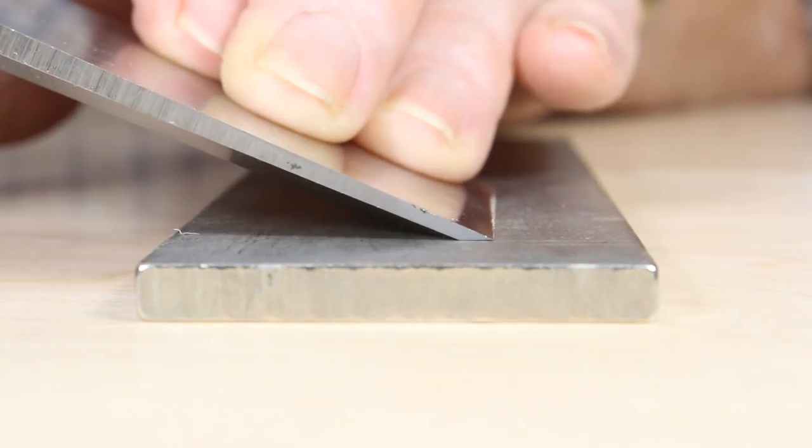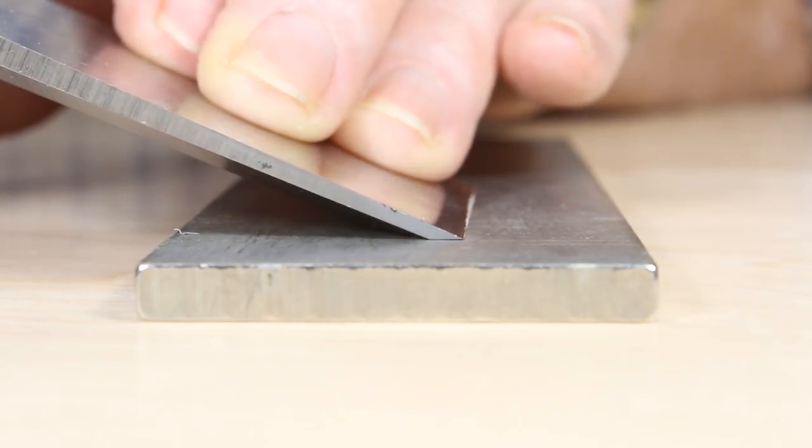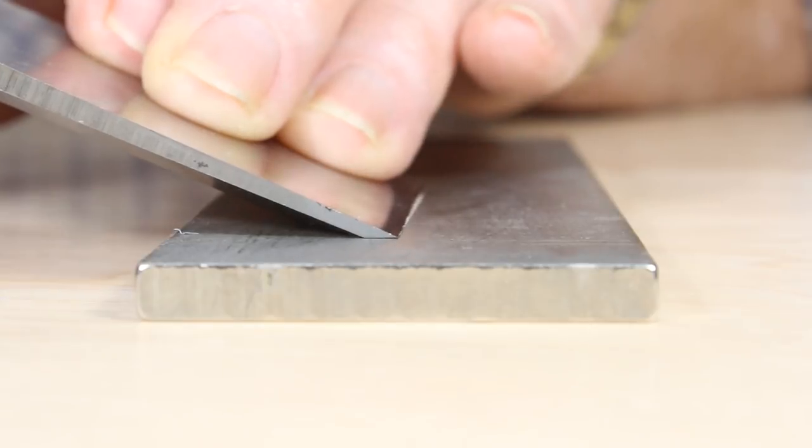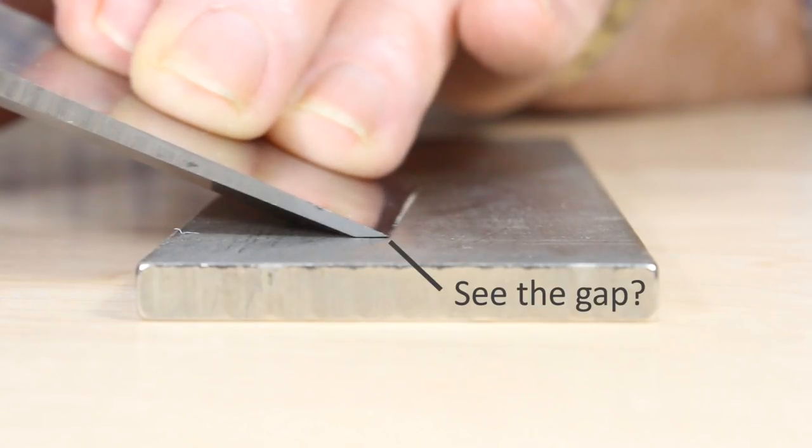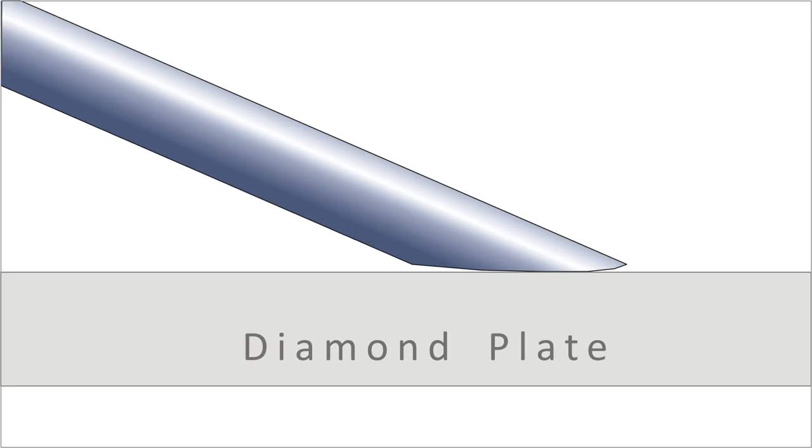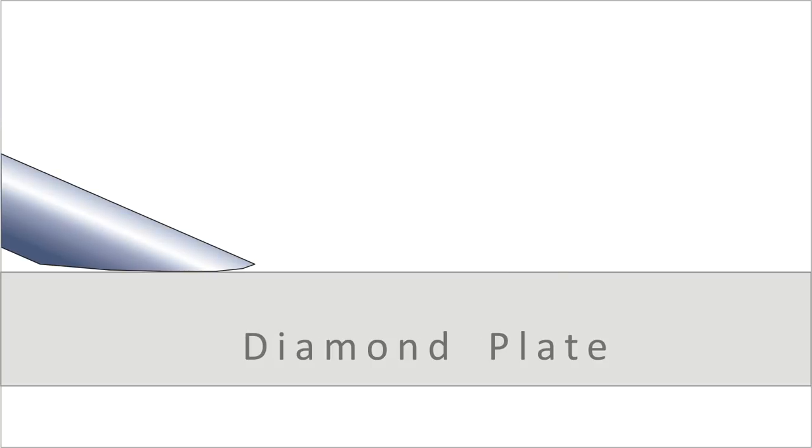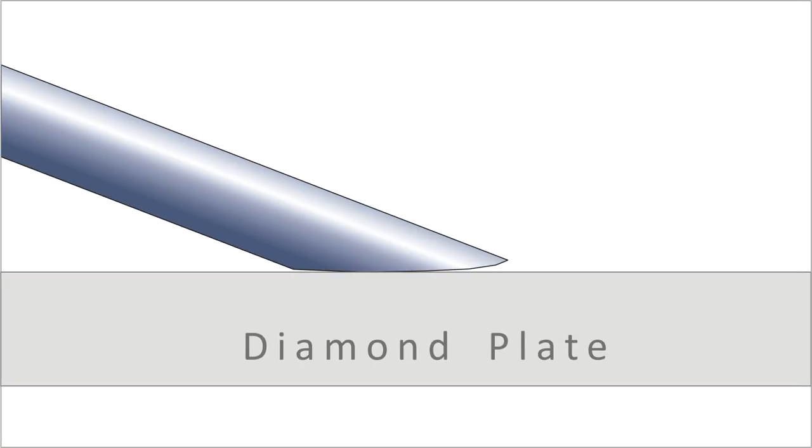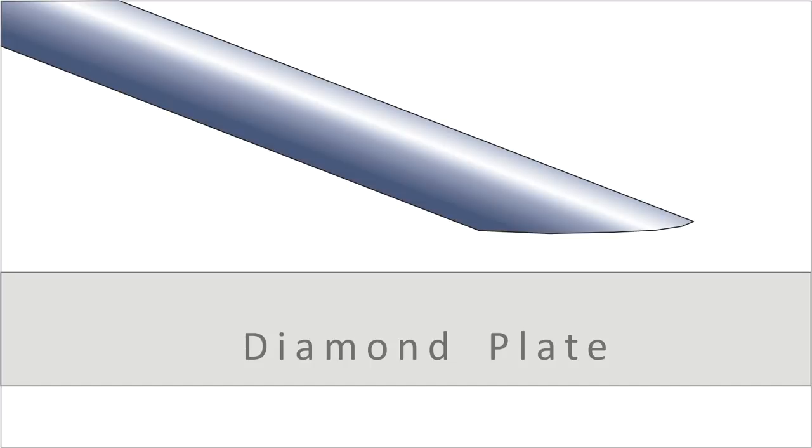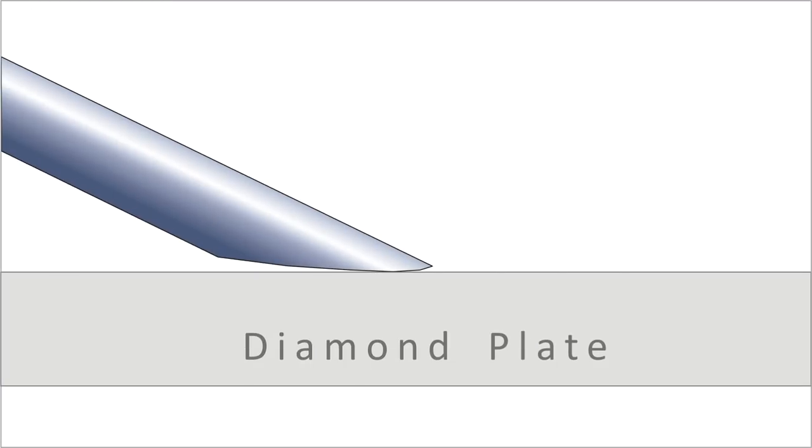If the bevel is not flat, then sometimes when you think you're sharpening, the edge is not even in contact with the stone. What frequently happens with a curved bevel is that every stroke is at a slightly different angle. This slows down the sharpening and produces inconsistent and frustrating results.